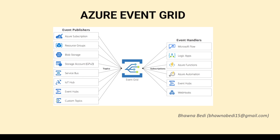Azure Event Grid is a centralized service in Azure which is used to route events. It is actually based on a publish and subscribe model. When routing events, the first thing we do is publish the events. Once we publish them, we route those events and subscribe to those events. That is why it is also called a publish-subscribe model.